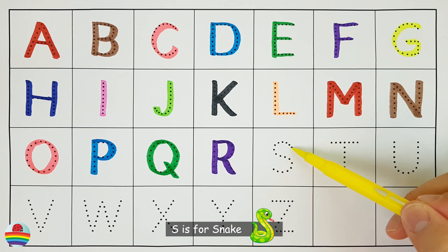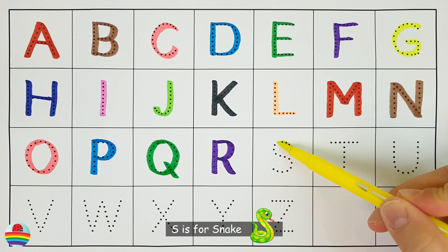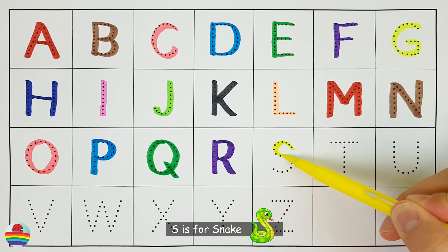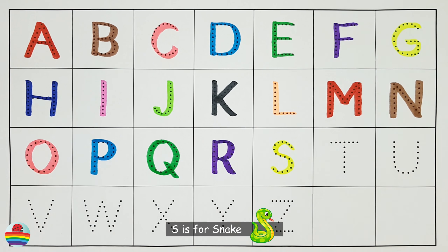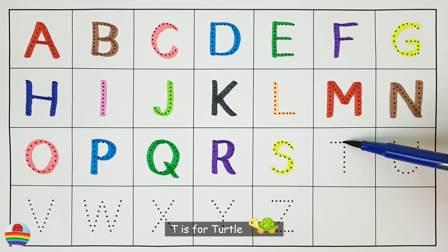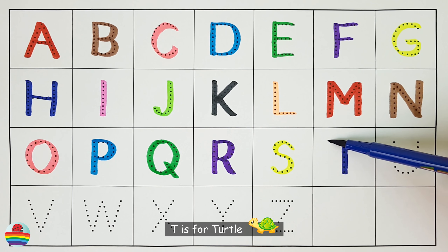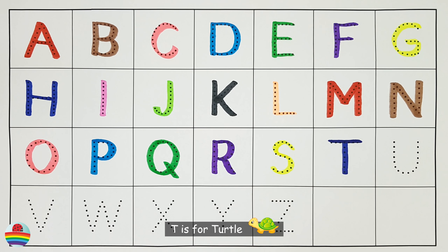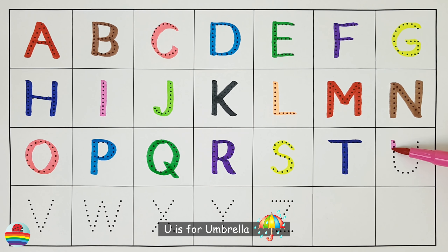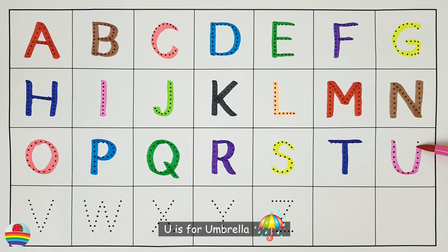S. S is for snake. S. T. T is for turtle. T. U. U is for umbrella. U.